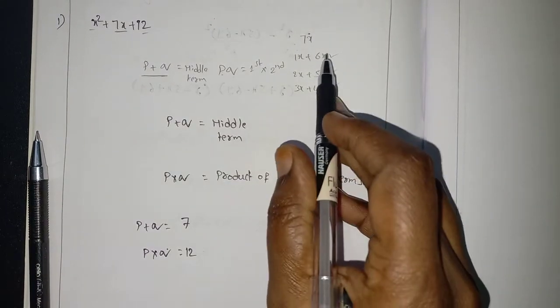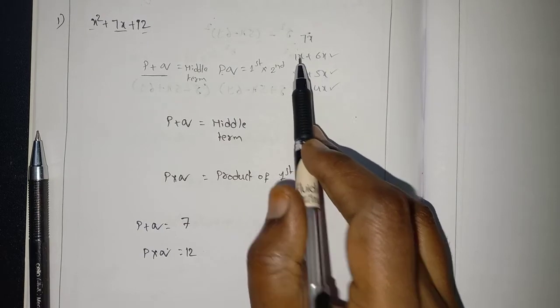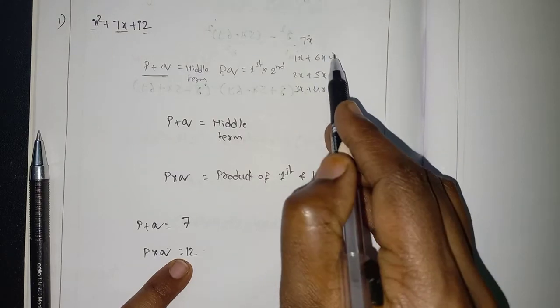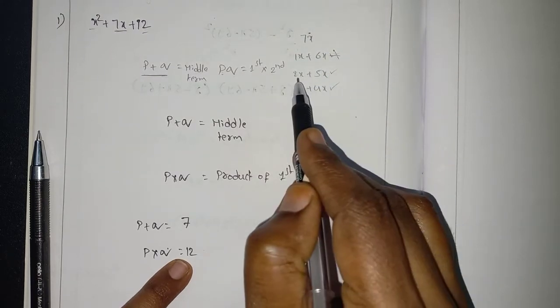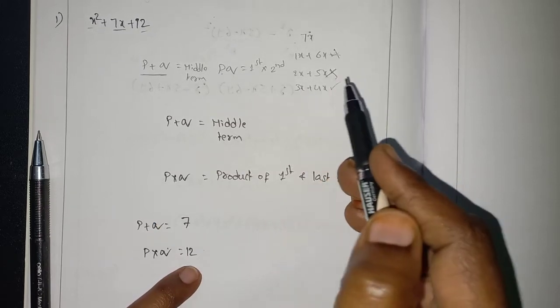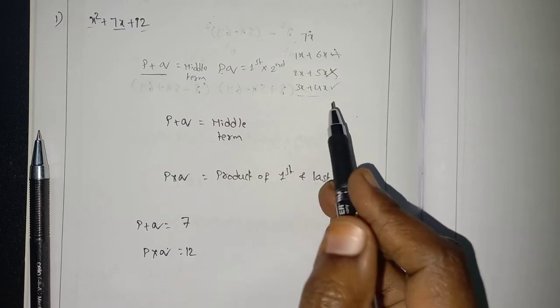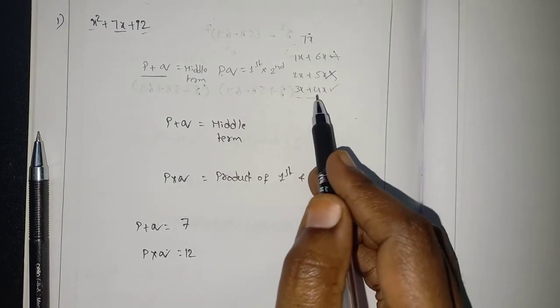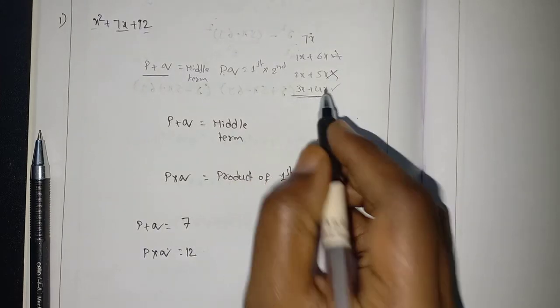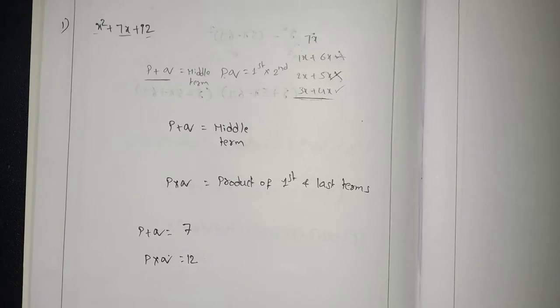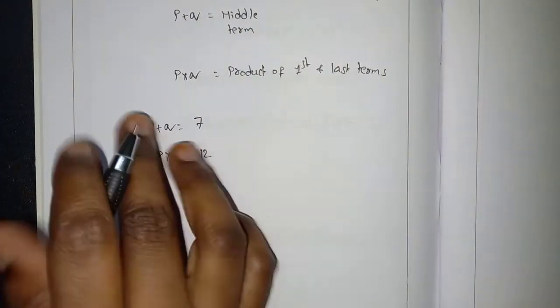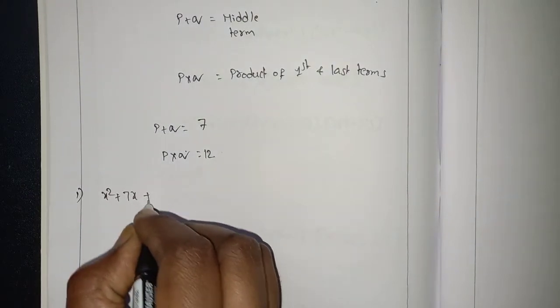Now, which of these three will satisfy these two conditions? 6 plus 1 is 7, but 6 into 1 is not 12, so this is not possible. Next, 5 plus 2 is 7, but 5 into 2 is not 12, so this is also not possible. Last one: 3x plus 4x. So 3 plus 4 is 7, and 4 into 3 is 12. Both the conditions are satisfied. Now, we have to split the 7x as 3x plus 4x.